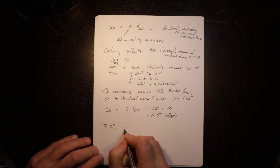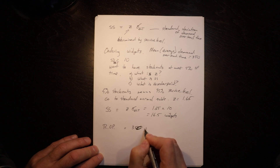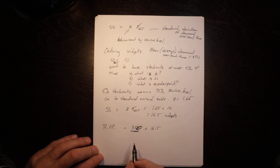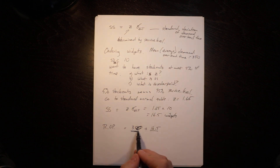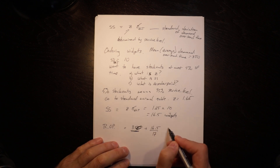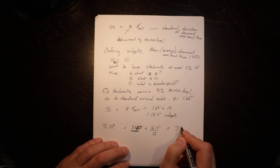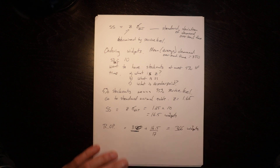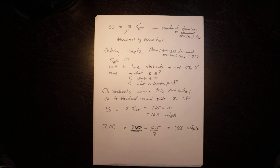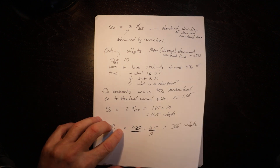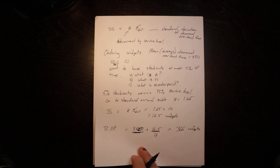Our reorder point is equal to 350 — the mean average demand over lead time — plus 16.5, the safety stock. This is what we expect it will take on average, but we want to make sure we run out less than the average amount of time. Since you can't divide widgets, we use 17 units of safety stock, which means our reorder point is 366 widgets. On average we will have 16.5 units left when our order comes in, but we will use it up some of the time too. The reorder point is the buffer stock plus what we expect will be demanded while waiting for the order to arrive.